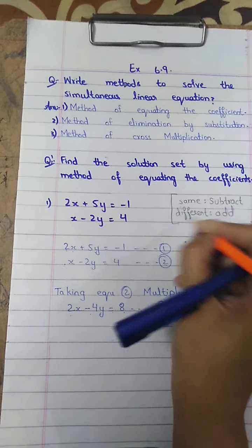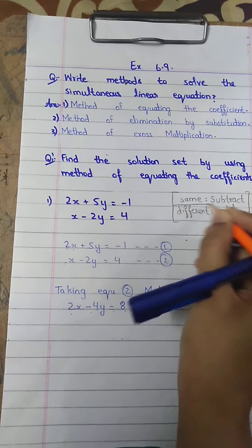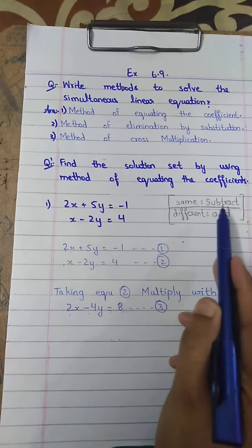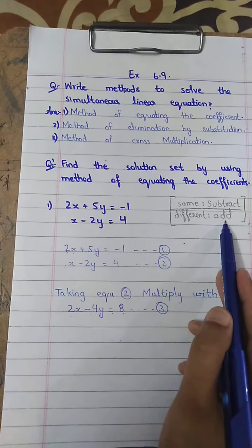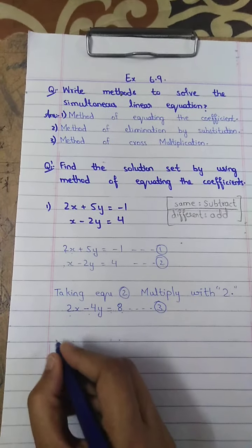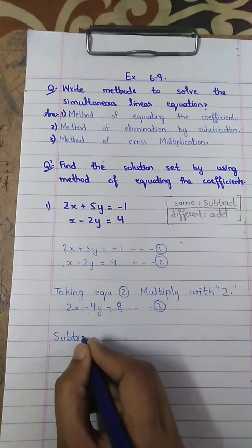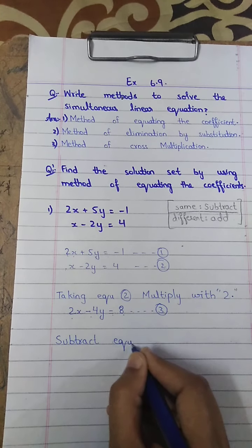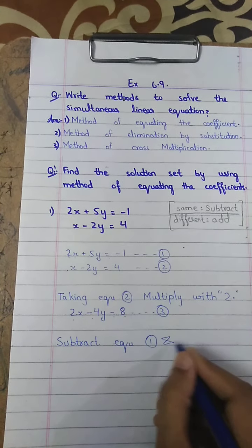Keep in mind this important rule: if the signs are the same, we will subtract the equations. If the signs are different, we will add the equations. Here the signs of the x terms are the same, so we will subtract equation 1 and equation 3.